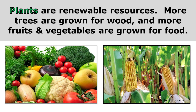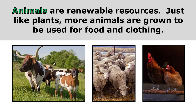Plants are renewable resources. More trees are grown for wood and more fruits and vegetables are grown for food. Animals are renewable resources too — just like plants, more animals are grown to be used for food and clothing.